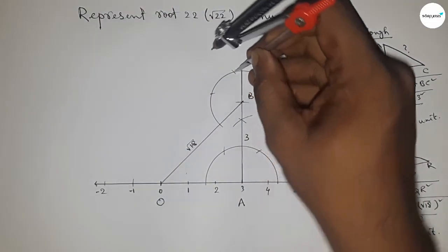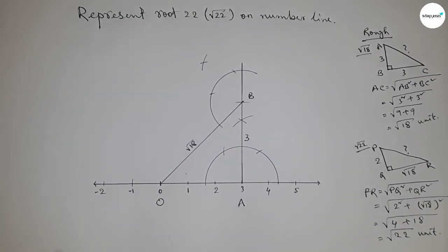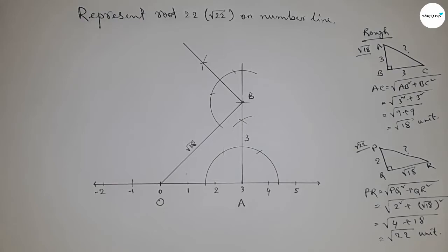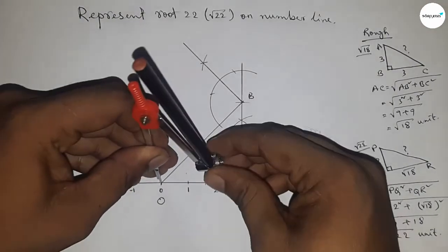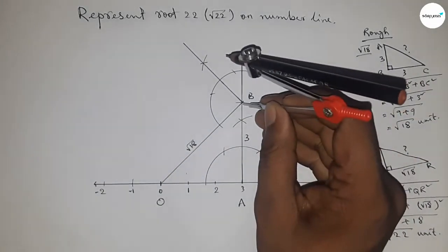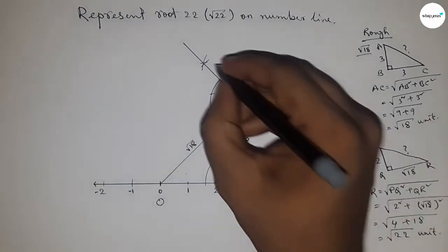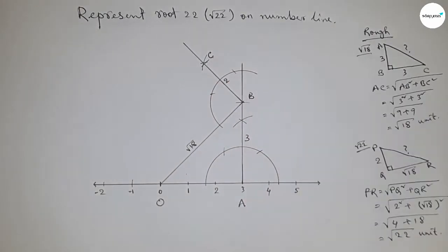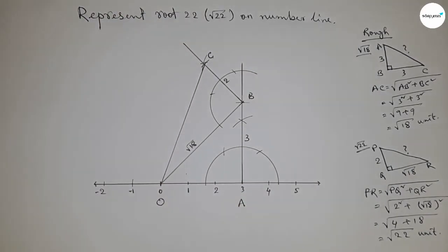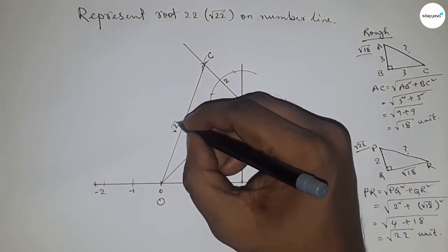Now joining this. Now taking two unit length by compass and by this way. So putting the compass here and cut here, so this is C point and this is two unit length. Now joining O and C. So from this we can say that OC equal to root 22 unit.